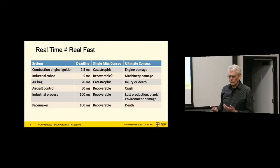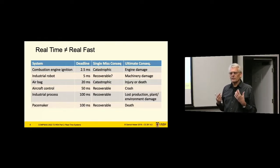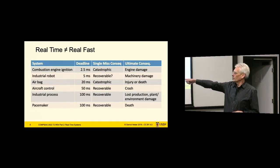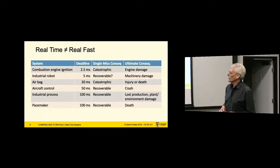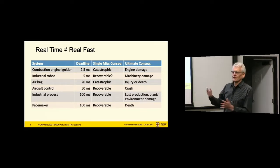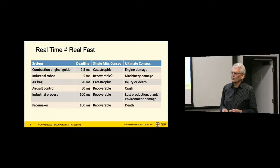One thing that's frequently misunderstood: real-time doesn't mean real-fast. The time constants of real-time — the deadlines — are in most cases fairly lax in the sense of fairly large. Typical examples: pacemakers have a deadline on the order of 100 milliseconds, industrial processes similar, aircraft need to be a bit faster, supersonic fighter jets even tighter but still in milliseconds. Airbags: dozens of milliseconds. Industrial robot: milliseconds. Combustion engine ignition is the most time-sensitive, which has to react in about two milliseconds — the rule is ignition must be accurate to one degree of the crankshaft.